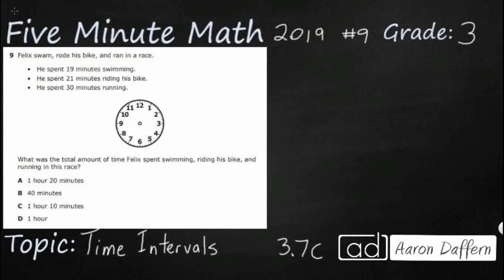So, Felix is doing quite a bit here. He's spending 19 minutes swimming, 21 minutes riding his bike, and 30 minutes running. We need to find the total amount, seems like it's a pretty straightforward problem so far. Total amount of time that he spent swimming, riding his bike, and running the race. Alright, so we need all three of these times, there's no extra information here.